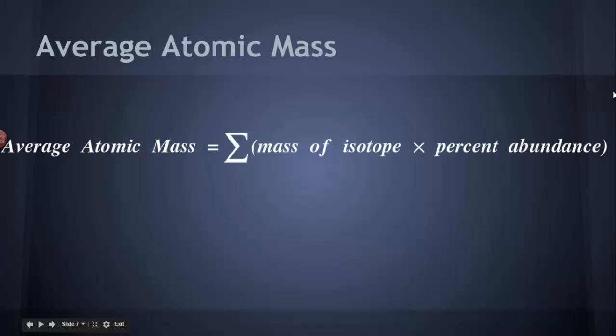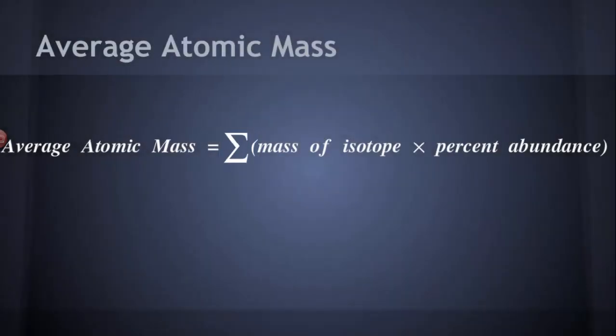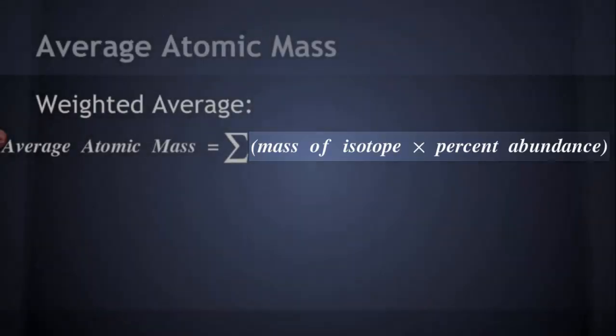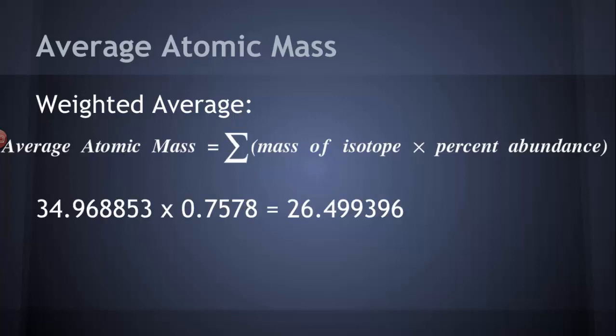Here's the formula. Now, we see that sideways little m thing, that's sigma. That means sum. And so, what we're going to do to do this weighted average is we're going to add up the products of the mass of each isotope times its percent abundance. That takes into account how much of each atom of chlorine is chlorine-35 and chlorine-37. So, we take the first one. The mass of chlorine-35, you remember, is 34.968853. We multiply it by its percent abundance, it's 75.78%, well, we're going to want to do that in decimal, so 0.7578. We get 26.499396.